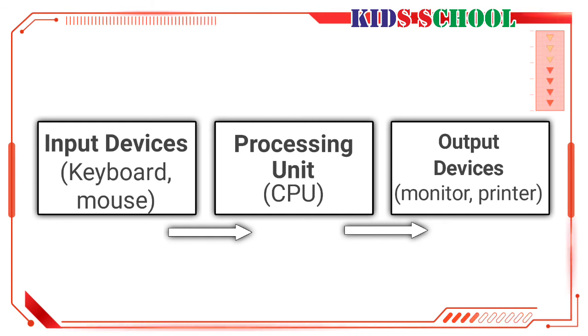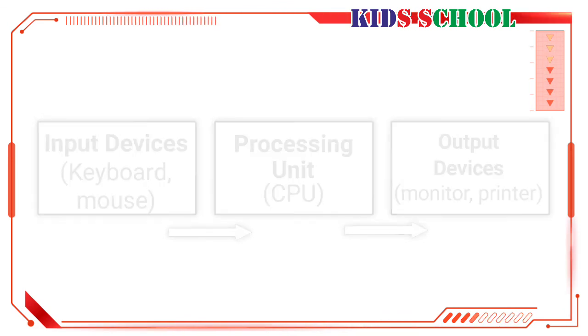The monitor displays the output, which means information generated by the CPU. If you want, you can print the output with the help of a printer. Hence, the monitor and printer are output devices.